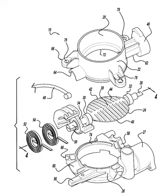What is often termed a throttle in an aviation context is also called a thrust lever, particularly for jet-engine-powered aircraft. For a steam locomotive, the valve which controls the steam is known as the regulator.